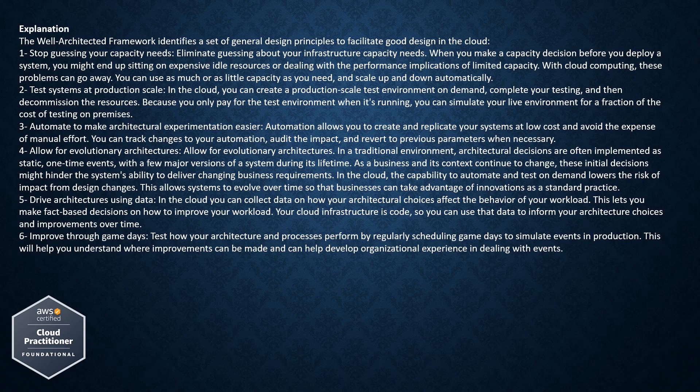Principle 4: Allow for evolutionary architectures. In a traditional environment, architectural decisions are often implemented as static, one-time events, with a few major versions of a system during its lifetime. As a business and its context continue to change, these initial decisions might hinder the system's ability to deliver changing business requirements. In the cloud, the capability to automate and test on-demand lowers the risk of impact from design changes, allowing systems to evolve over time so that businesses can take advantage of innovations as a standard practice.